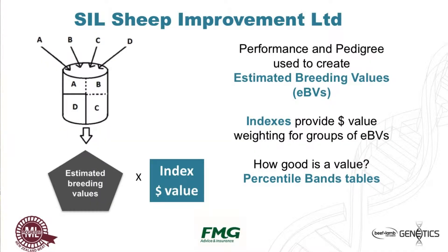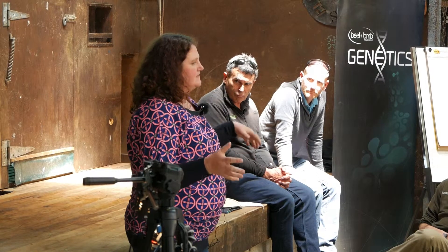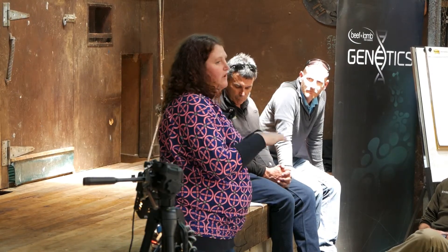The first step is to think of the SIL database as a container of data. Data from flocks A, B, C, D, and the stud breed data all comes into that container. Where flocks share rams, we've got a benchmark between different flocks so we can start giving cross-flock information. Where they don't share rams, we can still rank the rams from within that flock — figuring out which is the best and which is the poorer ram.